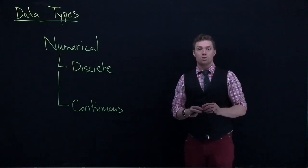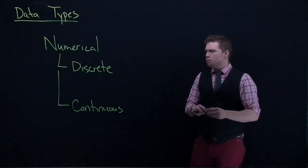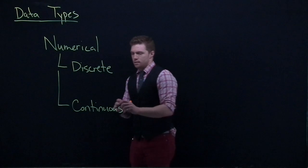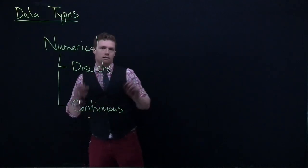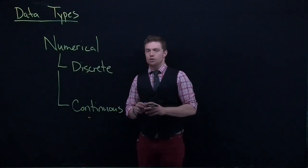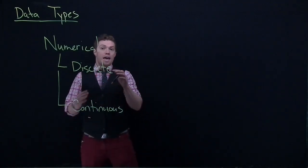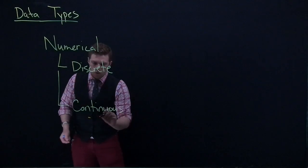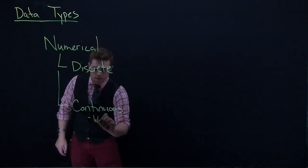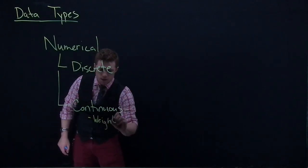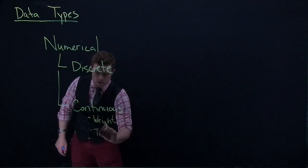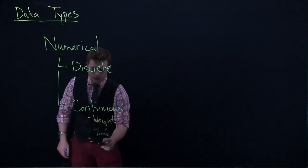Things that could be continuous are things like weight. I could weigh 180 pounds, I could weigh 180.2, I could weigh 187.94, so it can be anywhere along the number scale. Weight is a good one, time is another good one, and distance—all of those are good examples of continuous data.